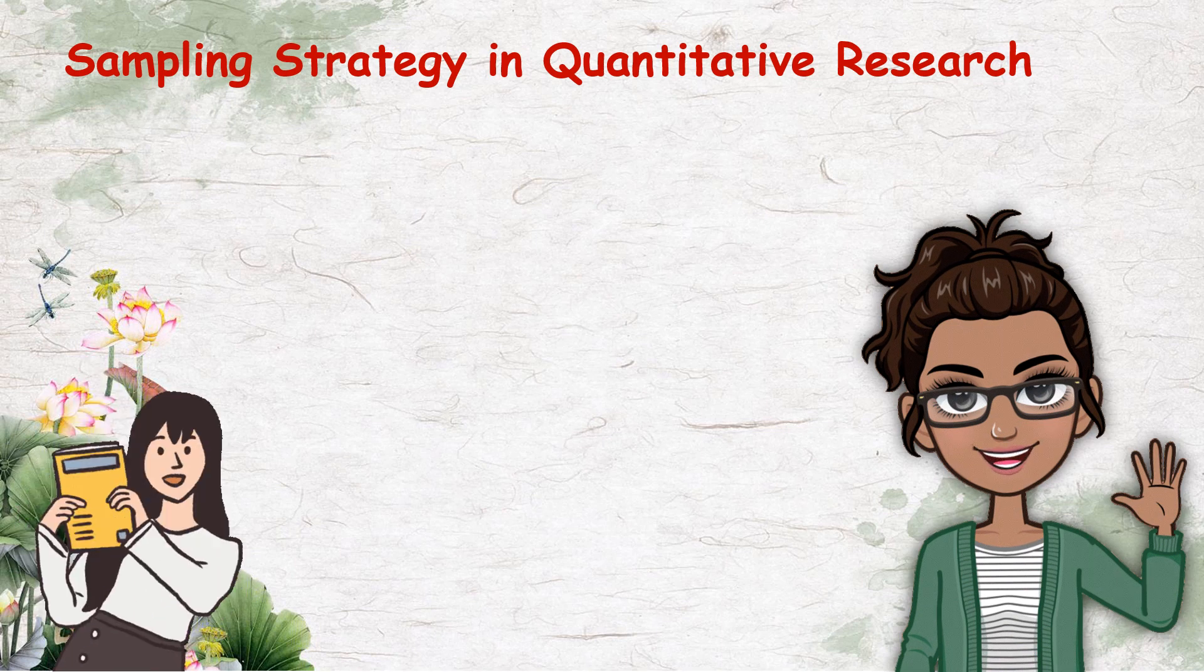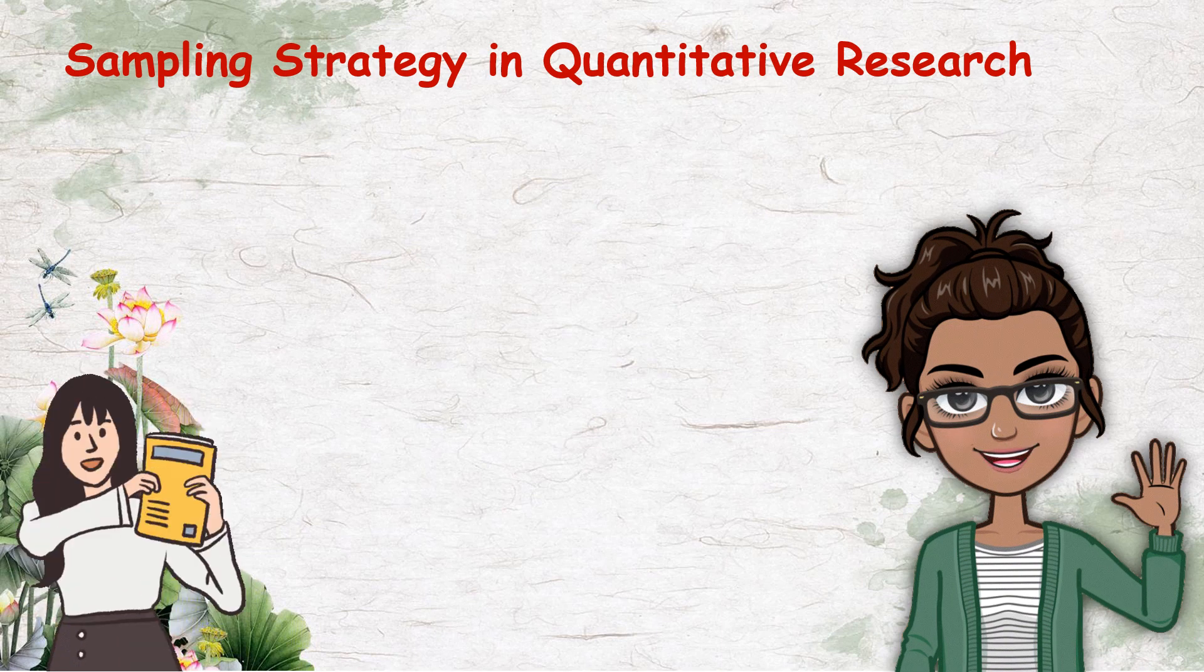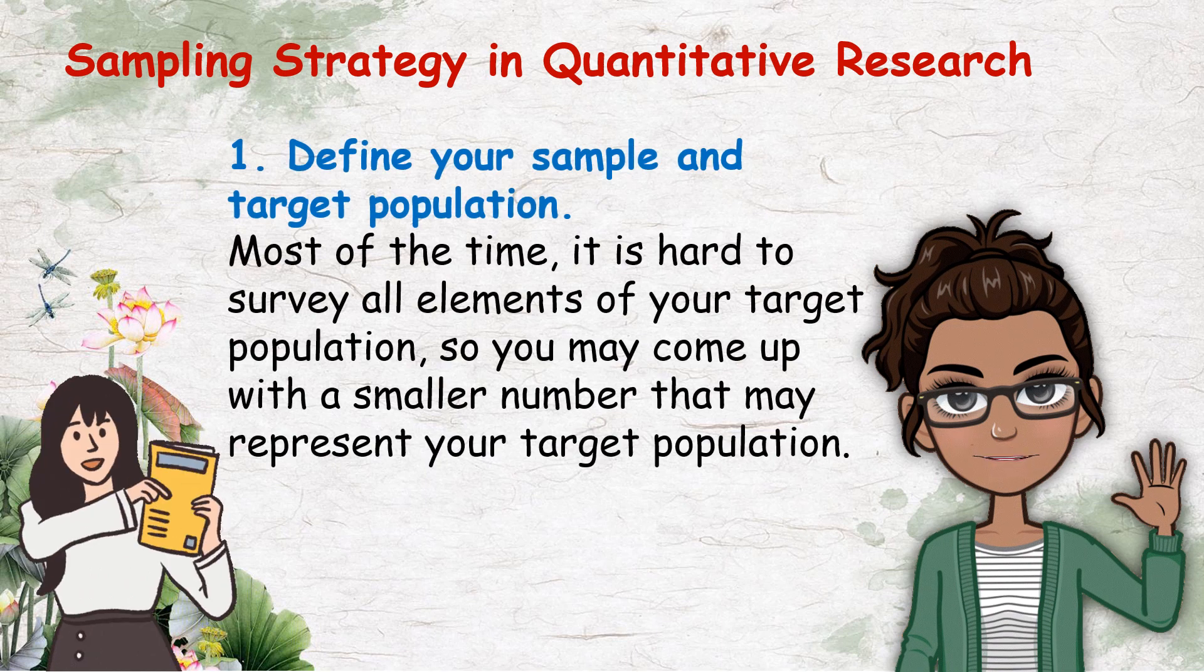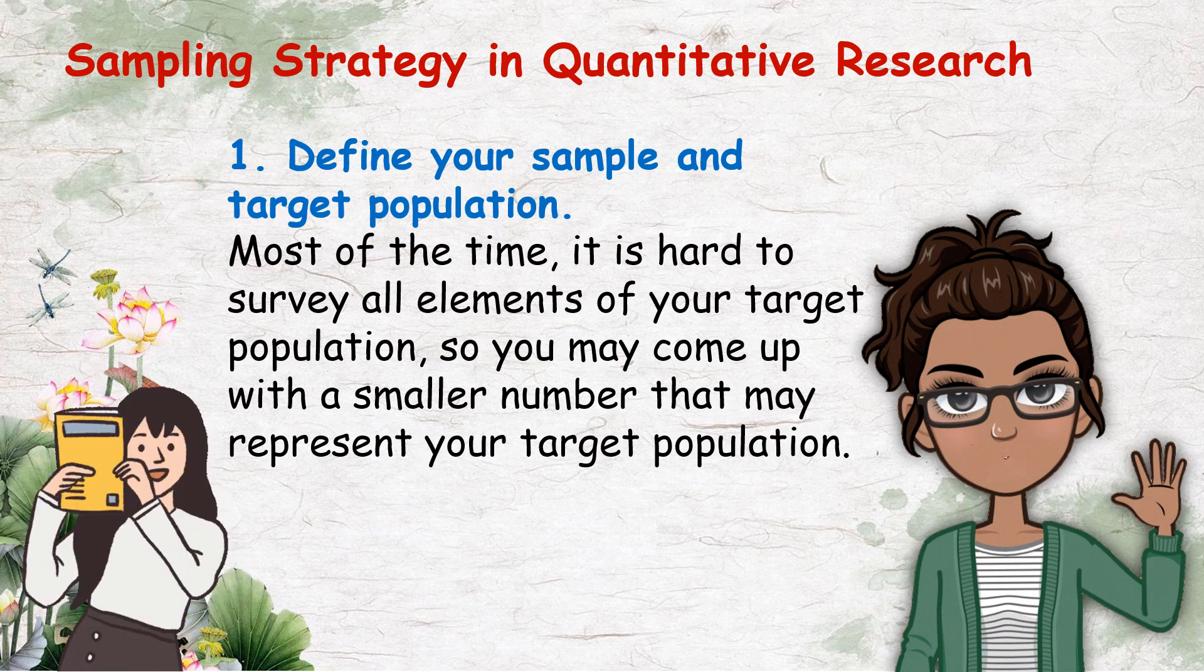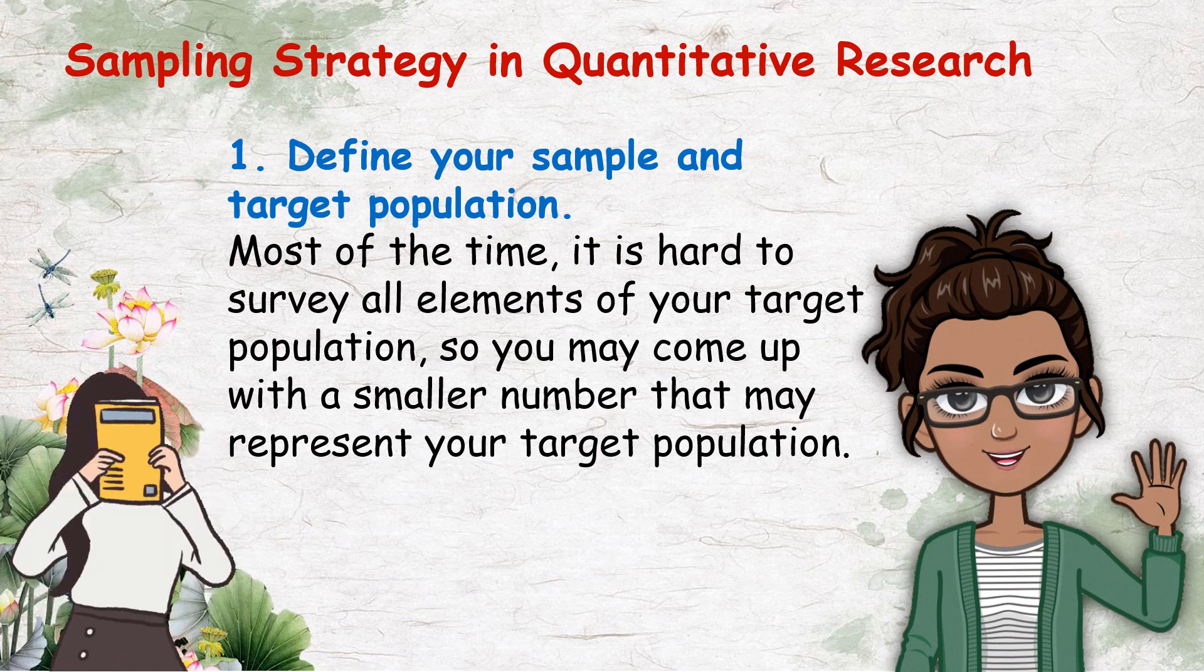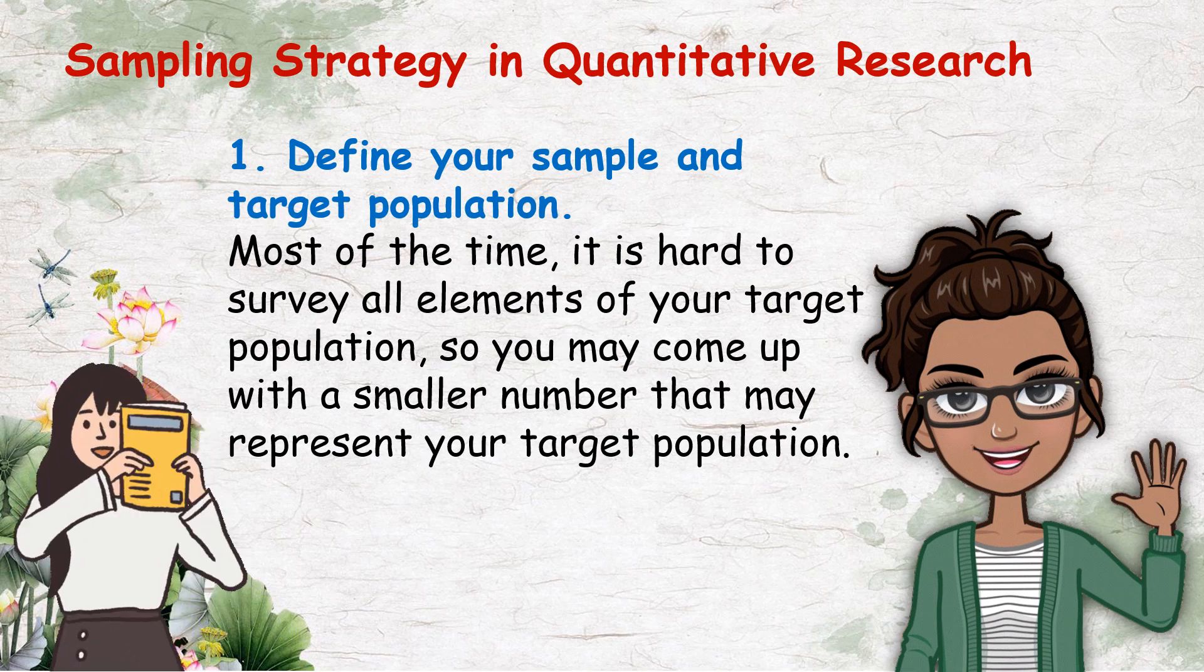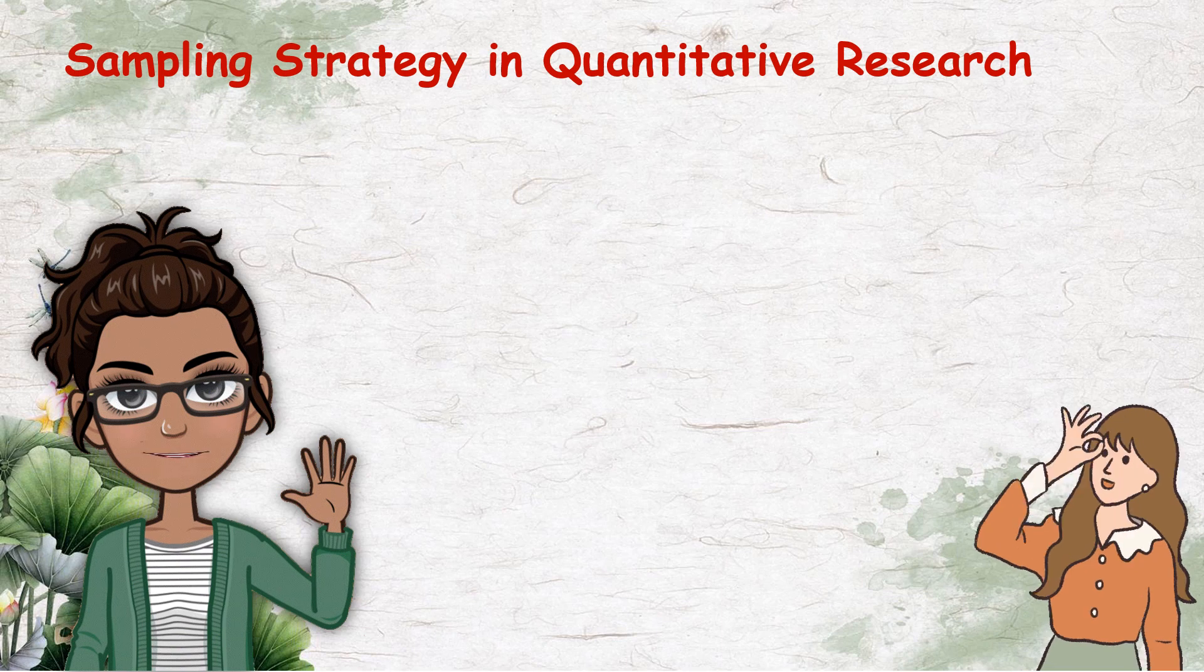Sampling strategy is an important step to ensure that your data truly reflects the characteristics of your target population. Mukherjee in 2019 cites steps in formulating sampling plan in quantitative research. First, define your sample and target population. Most of the time, it is hard to survey all elements of your target population, so you may come up with a smaller number that may represent your target population. For example, it may not be feasible to visit all 10,000 students in your target school. Instead, you'd want to choose a smaller sample that would be representative of the population and reflect its characteristics.